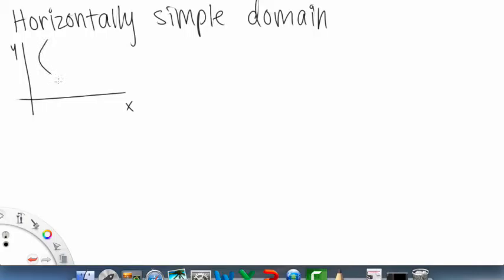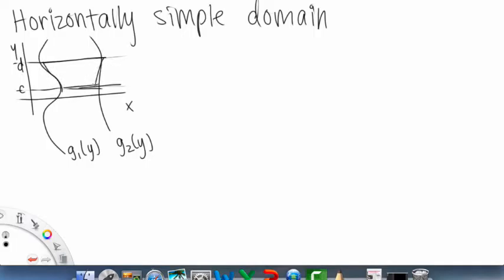And now we have some curves going up and down. So then this looks like that. We'll call this G1 of Y and G2 of Y. And then what we actually have going on here is horizontal lines. Horizontal lines, and our bounds for Y are C and D. So we're looking at this region here, right in there.